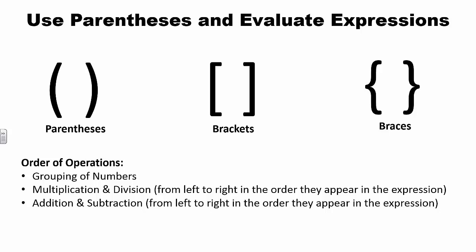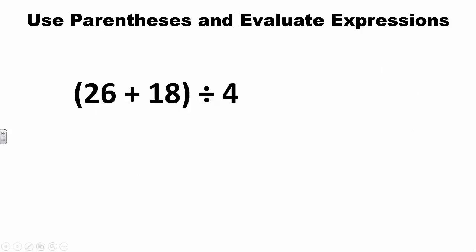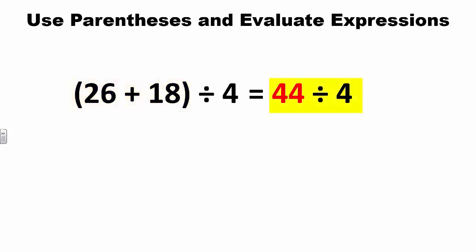Students apply their knowledge of order of operations with computation of fractions and decimals in later units. Let's look at some examples of expressions that students might simplify. The first example is (26 + 18) ÷ 4. Following the order of operations, we start by computing 26 plus 18 since it is grouped together by parentheses. 26 plus 18 equals 44. Now we divide 44 by 4, which equals 11.